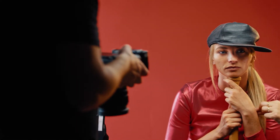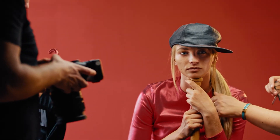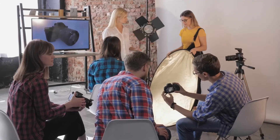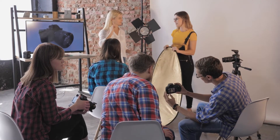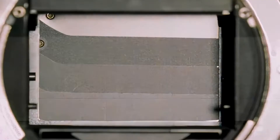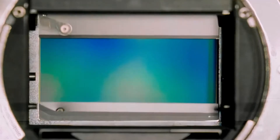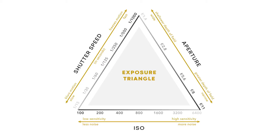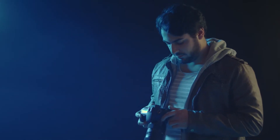Hello everyone, Raf here from BNC Camera. Capturing the best photo will rely heavily on the settings you choose — you're going to need more than just a fancy camera. Understanding each of the building block settings will set your photography apart. The three building blocks are ISO, aperture, and shutter speed, simply called the exposure triangle. In this particular video, we'll be discussing shutter speed.